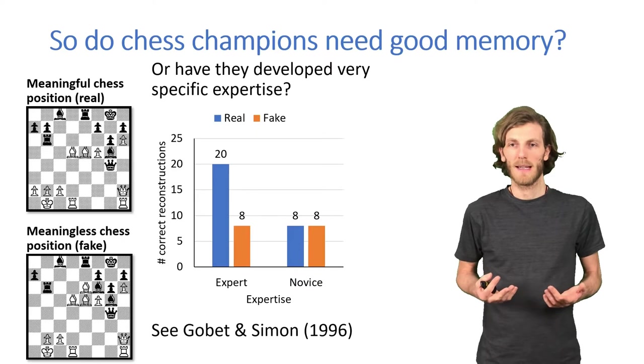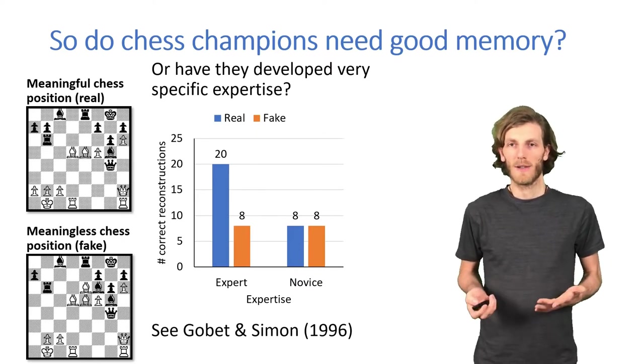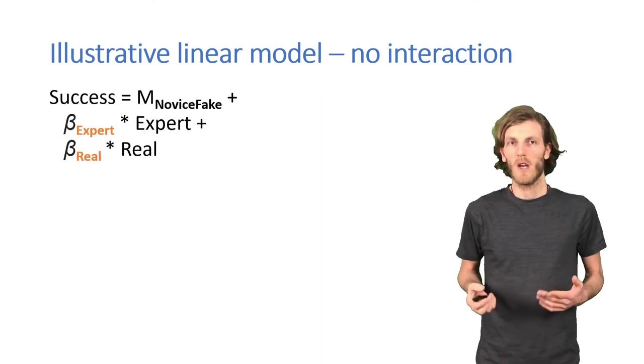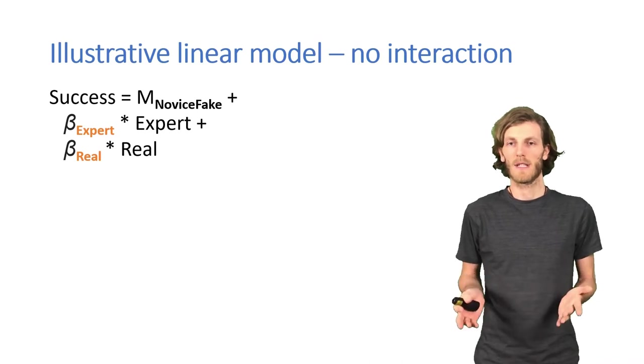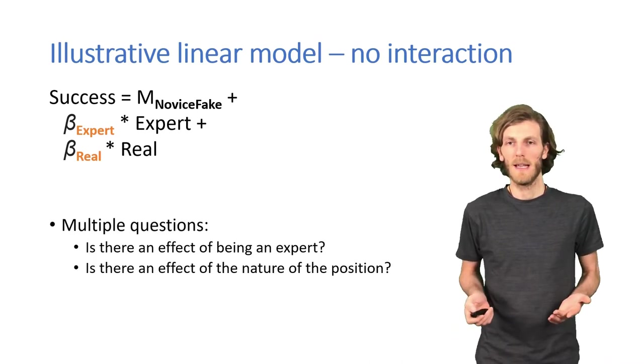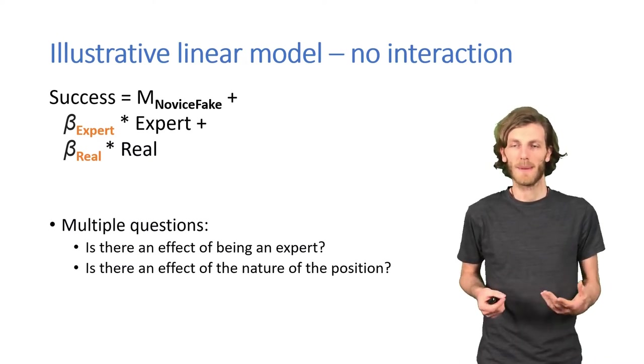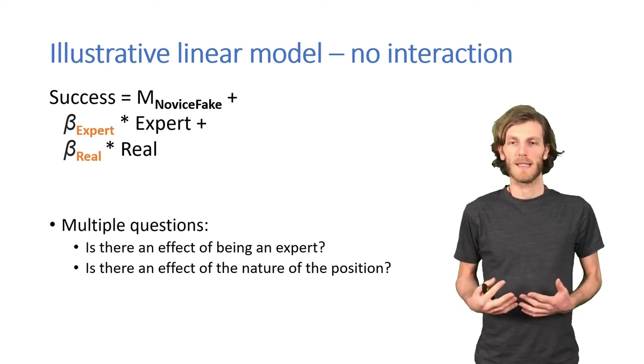You can look at this paper by Goblet and Simon if you are interested. But if we try to turn this into a linear model, the linear model becomes a bit more complicated, because we have a second predictor variable. So far, it's now just a case of multiple rather than simple linear regression. We would be able to answer whether there is an effect of being an expert, and there is an effect of whether or not a position is real.